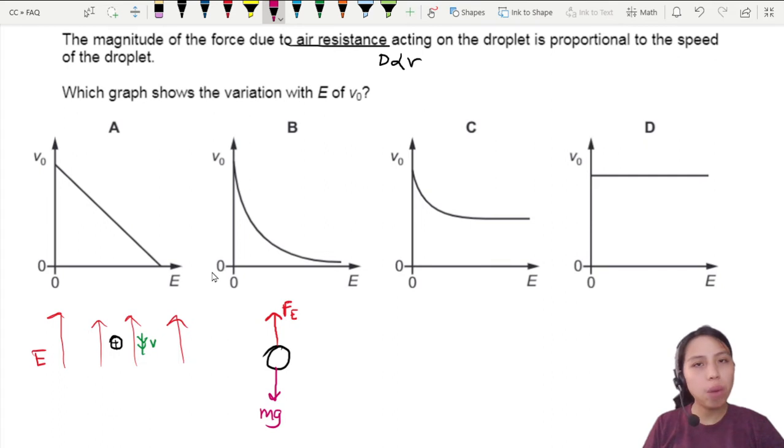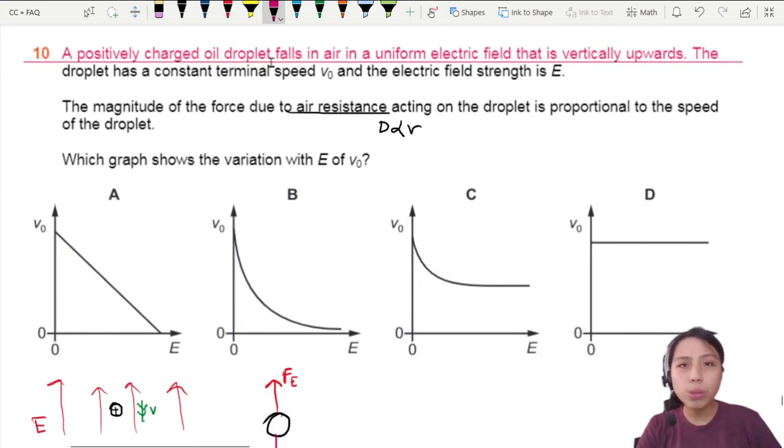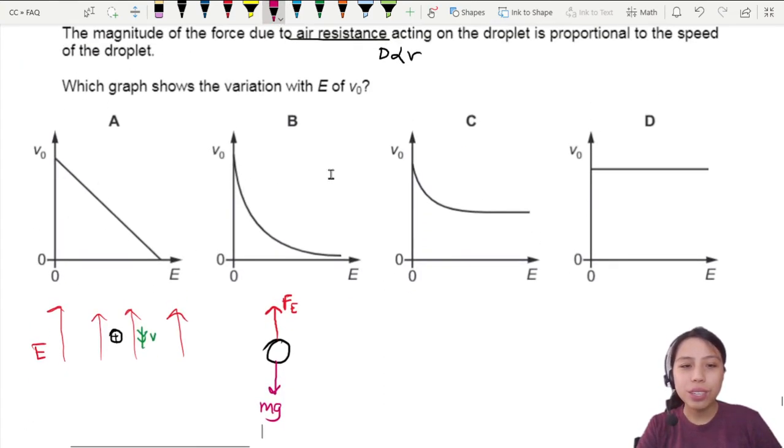Next, air resistance. If you are falling, and oil drop falls, yes correct, you are falling, so that means the velocity is downwards. That means the drag force is upwards.